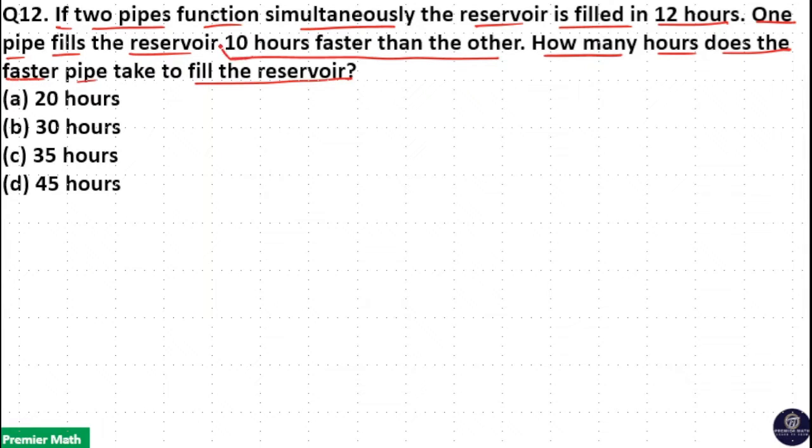Here, the time difference between both pipes to fill the reservoir is 10 hours. That means if the faster pipe takes X hours to fill the reservoir, then the slower pipe must take X plus 10 hours to fill the reservoir. Time difference here is 10. That is, the slower pipe takes 10 hours more than the time taken by the faster pipe.